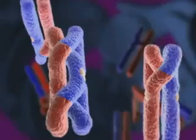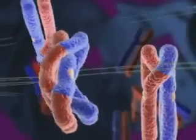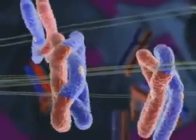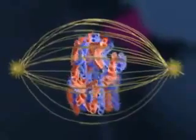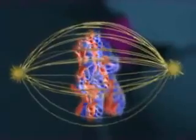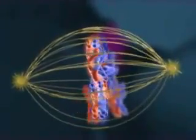After the spindle forms and the nuclear envelope breaks down, microtubules from opposite poles attach to each chromosome of the homologous pair, resulting in a tug of war. At metaphase I, the chromosome pairs are positioned in the middle of the cell.